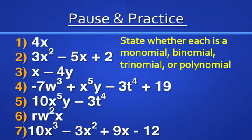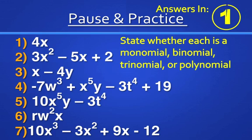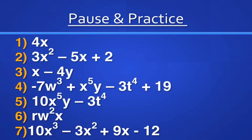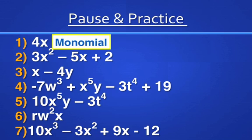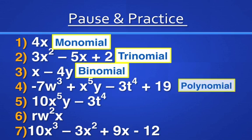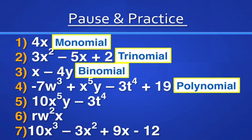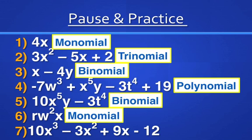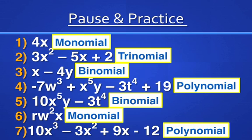Here's your pause and practice — pause and practice, and when you're done, unpause the video. After a 3, 2, 1 countdown, your answers will be displayed. The answers are: number 1 is a monomial, number 2 is a trinomial, number 3 is a binomial, number 4 is a polynomial, number 5 is a binomial, number 6 is a monomial, and number 7 is a polynomial.